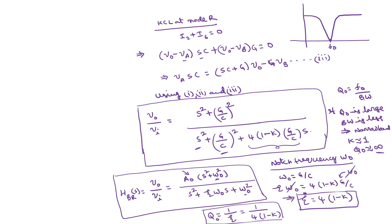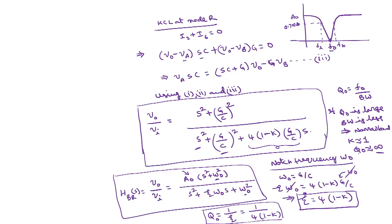Q0 approaching infinity means the bandwidth is almost 0, so the filter rejects only a single frequency. This is the desired behavior for a good band reject or notch filter — it must reject only a single frequency while not attenuating the remaining frequencies. To achieve a large Q0, design K to be approximately equal to 1 by choosing R2/(R1+R2) ≈ 1. We will discuss design examples of band stop filters in the next lecture.